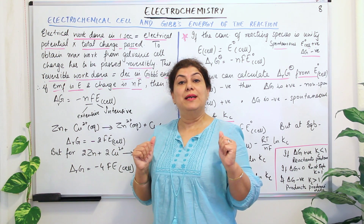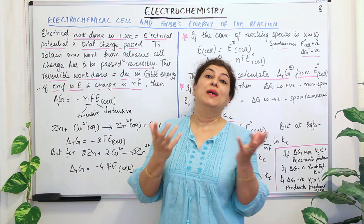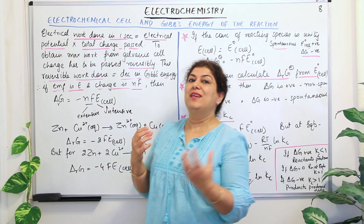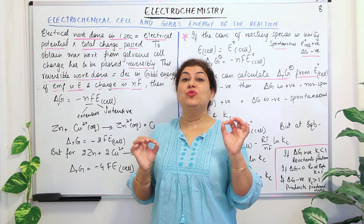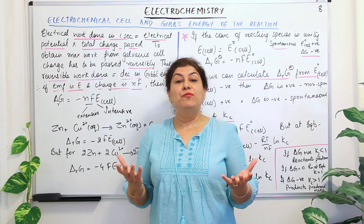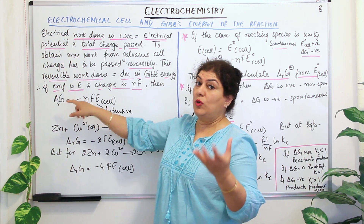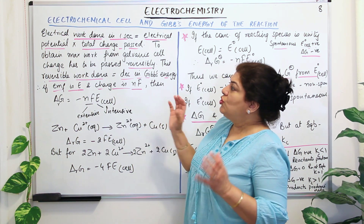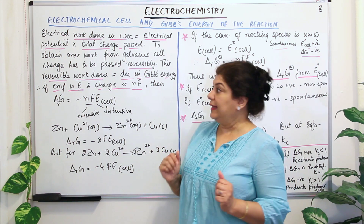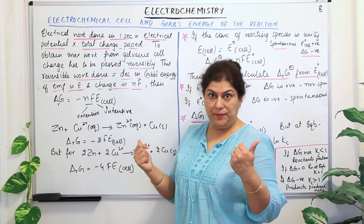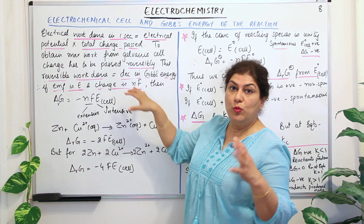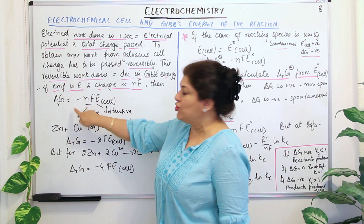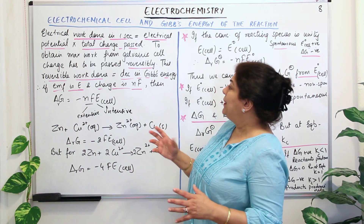The maximum amount of work will be done when all of the energy is used up to do work. Whenever we say thermodynamically that energy is used up, we use the convention of a negative sign. So when delta G is being consumed, there is a negative sign. The reversible work done by the system will be equal to the decrease in Gibbs energy, shown by the negative sign.